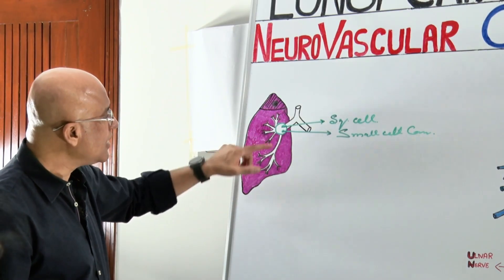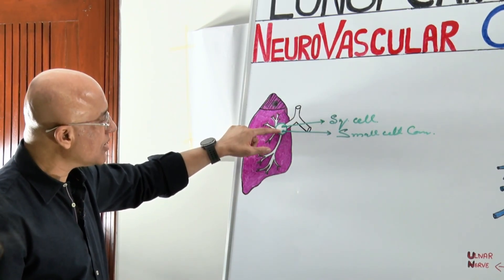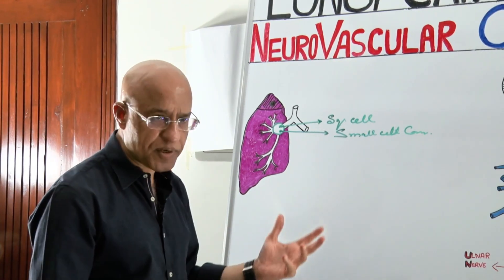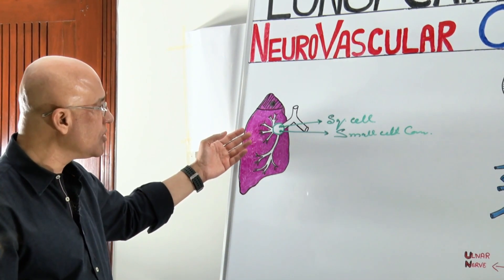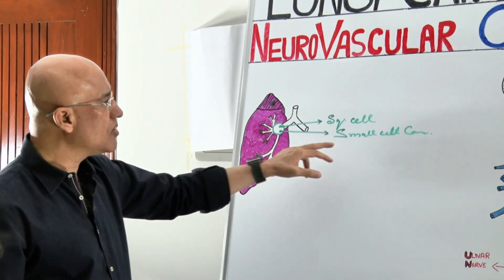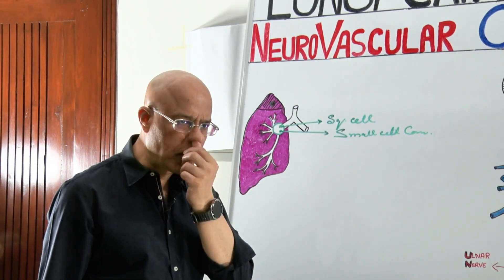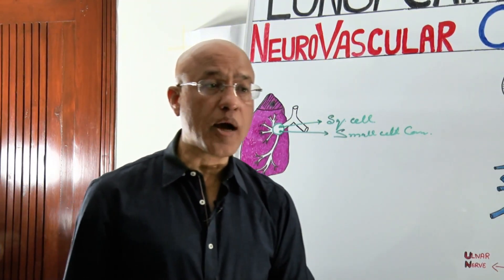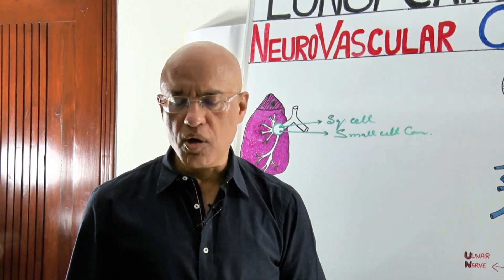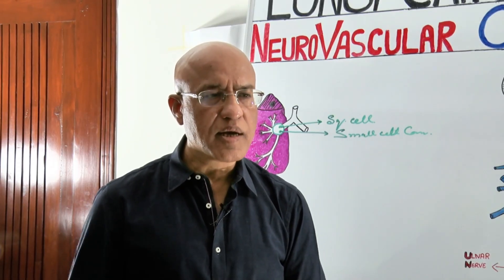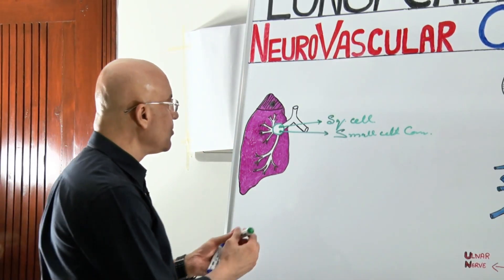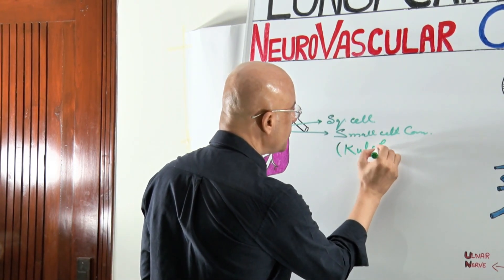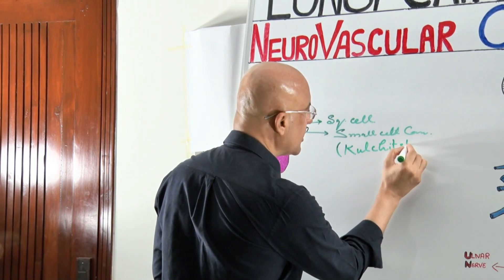Another type of lung cancer which can take origin centrally — more commonly, even though it can be at other places — is small cell carcinoma. The cell of origin for small cell carcinoma is neuroendocrine cells, also called Kulchitsky cells.